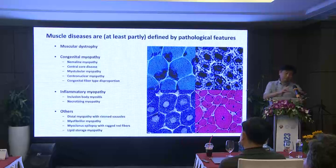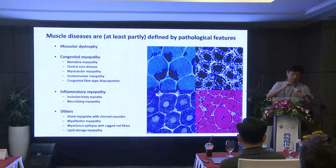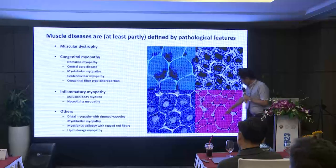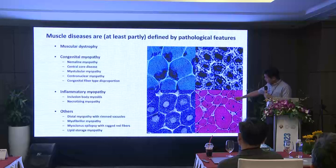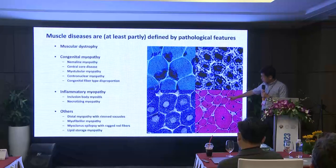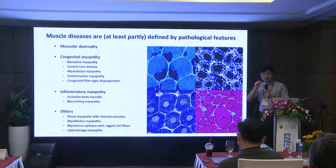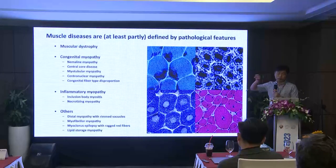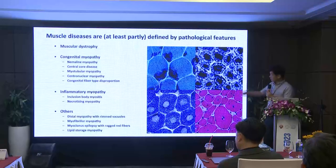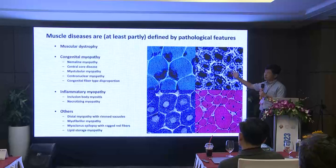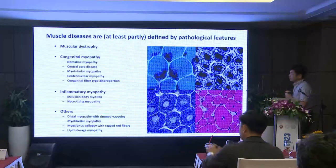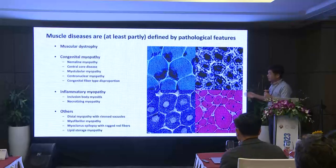This is called nemaline myopathy, because this structure is called a nemaline body. This one is central nuclear myopathy because normally the nucleus of the myofiber is located at the periphery, but in this case many fibers have nuclei in the center. This is why it's called central nuclear myopathy. This one looks like a myotube — myotubes are like immature myofibers — so this is called myotubular myopathy. These are all collectively called congenital myopathy, historically defined by morphological features.